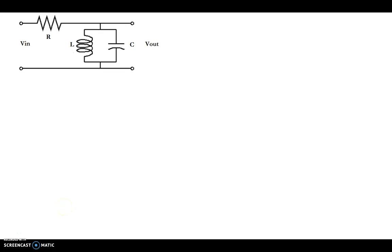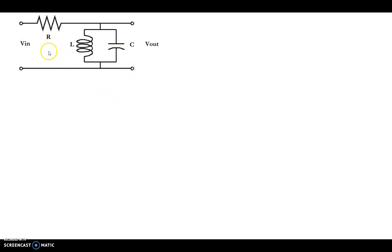Welcome back. In this example, we will take a look at this circuit and determine the frequency response across this LC network. We have an RLC circuit with an inductor and a capacitor in parallel to each other, and we have an input voltage where we'll vary the frequency and look at what the output voltage looks like. We're asked: what is the transfer function, and does this circuit behave as a low-pass filter, high-pass filter, or a bandpass filter?